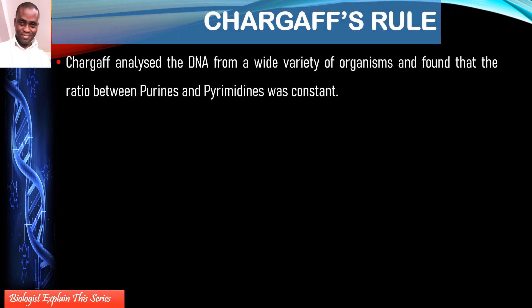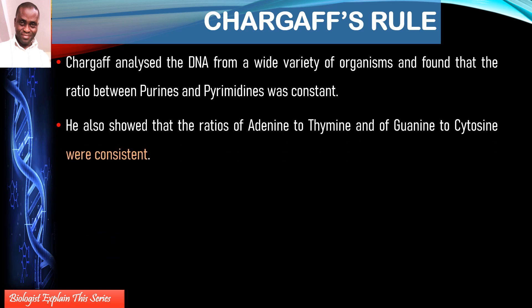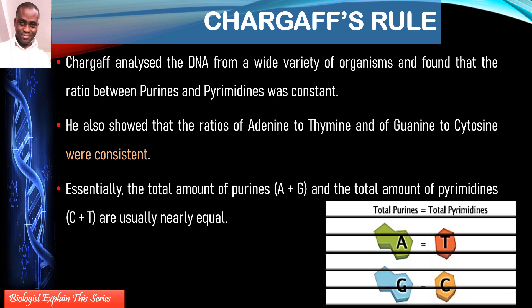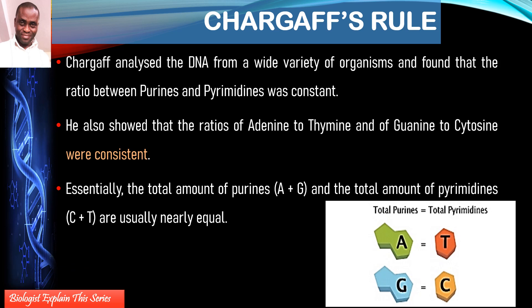Let's look at the role of Erwin Chargaff. Without his discovery, it might have been difficult for Watson and Crick to piece together their model. By analyzing the DNAs of different organisms, Chargaff discovered that the percentage of purines and pyrimidines was always consistent — approximately 50% purines and 50% pyrimidines in every sample of double-stranded DNA. The A-T and C-G ratio was consistent in every organism.